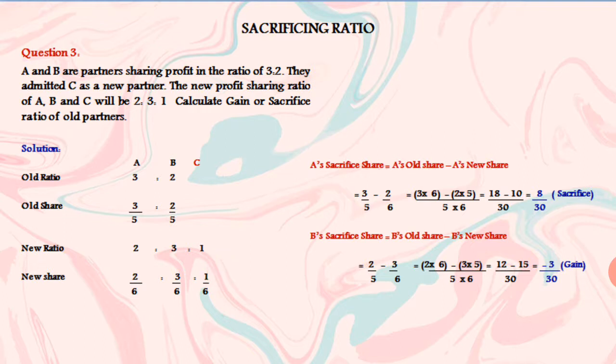Now, let's apply the sacrificing ratio formula. Sacrificing ratio is old ratio minus new ratio. A's sacrifice share: A's old ratio minus A's new ratio. Old ratio is 3 by 5. A's new ratio is 2 by 6. So 3 by 5 minus 2 by 6.